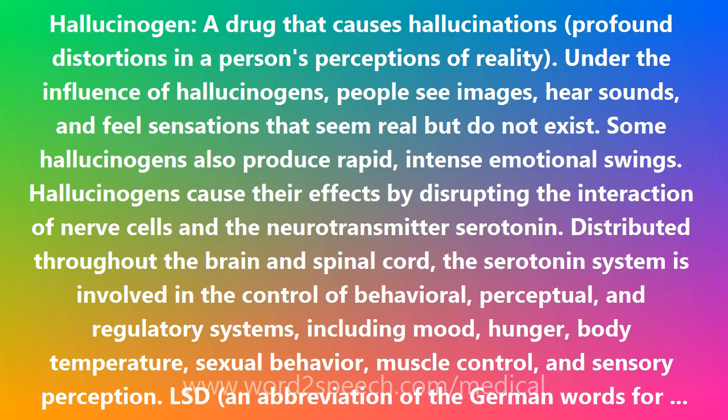Hallucinogens cause their effects by disrupting the interaction of nerve cells and the neurotransmitter serotonin. Distributed throughout the brain and spinal cord, the serotonin system is involved in the control of behavioral, perceptual, and regulatory systems, including mood, hunger, body temperature, sexual behavior, muscle control, and sensory perception.